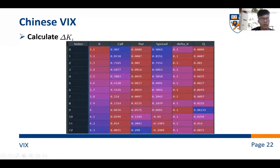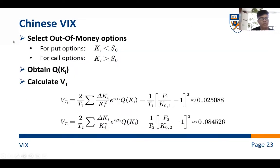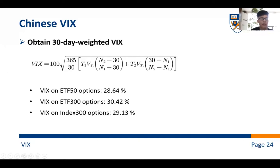And here are the steps of the Chinese VIX calculation. So, first, we compute the theta K. And then we have to select the out-of-money options and obtain the QK and calculate the VT, which indicates the volatility at T1 and T2. And then we can obtain the 30-day VIX using a linear interpolation between these two volatilities. And we can see that the VIX implied from three different Chinese stock index options is very close to each other.